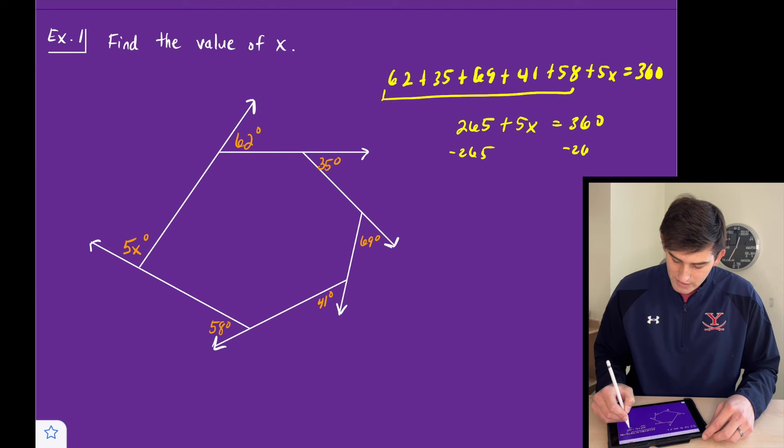And now we can move 265 to the other side by subtracting it, and we get 5x equals 95. And now we divide both sides by 5 and we get x equals 19.